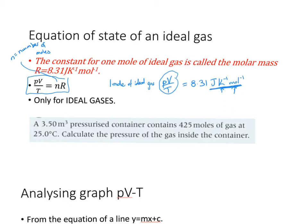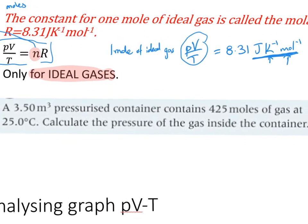This equation tells us that depending on the number of moles of a substance, your PV/T answer will equal n times 8.31. This is applicable only for ideal gases — that's very important. Let's do a quick question: a 3.5 m³ pressurized gas container contains 400 moles of gas.